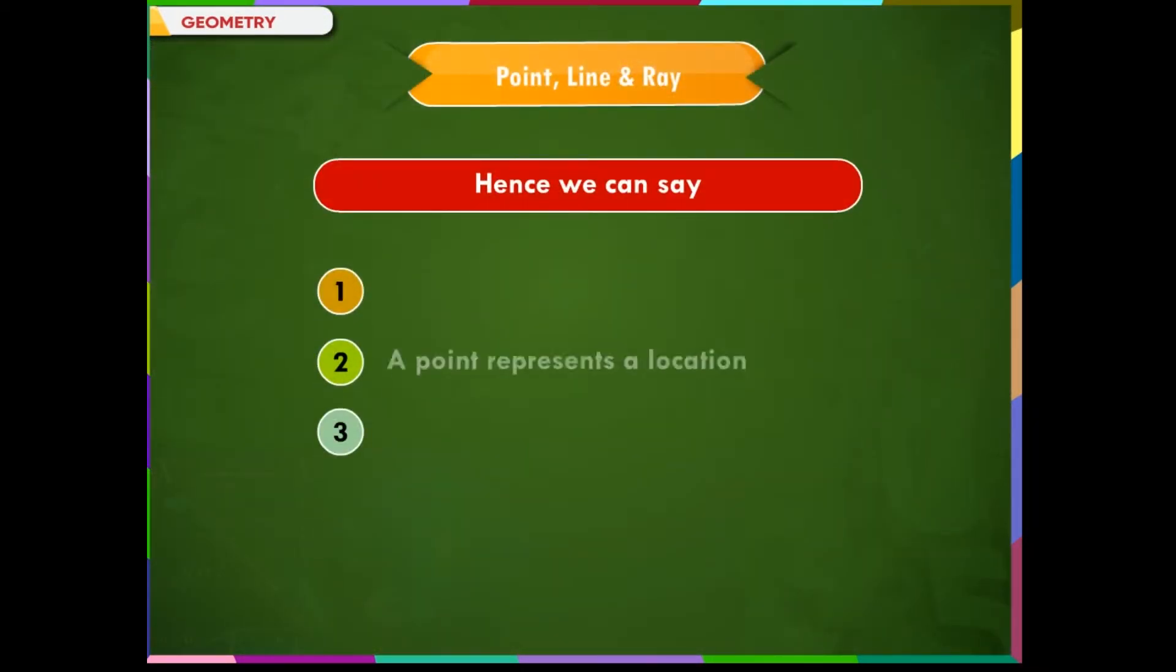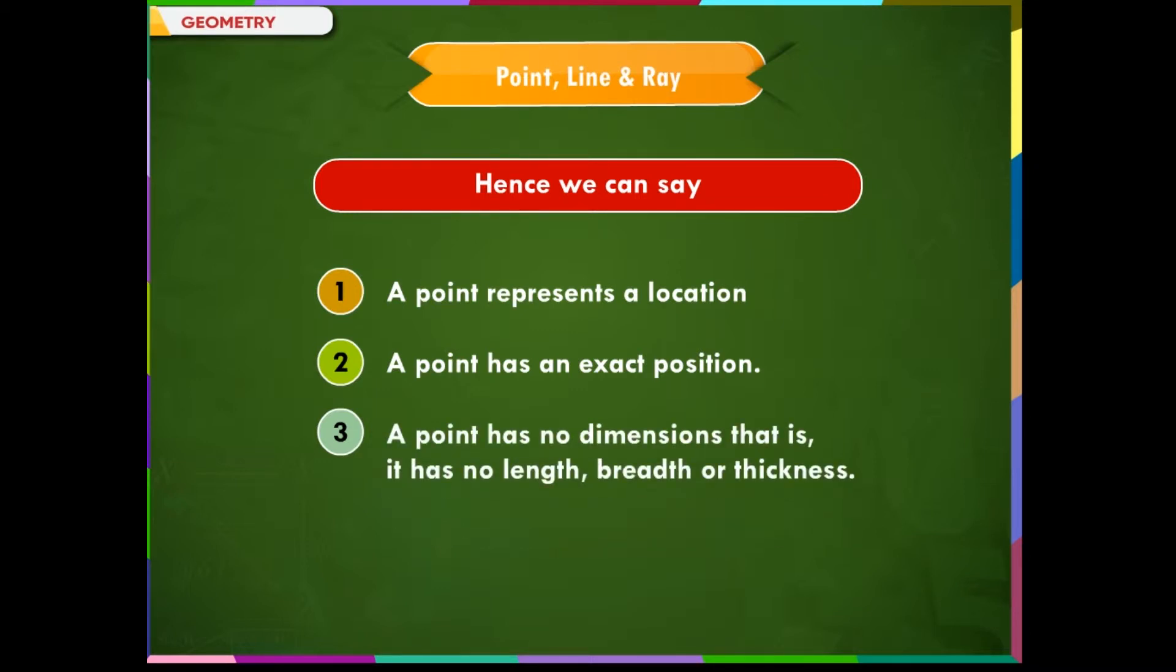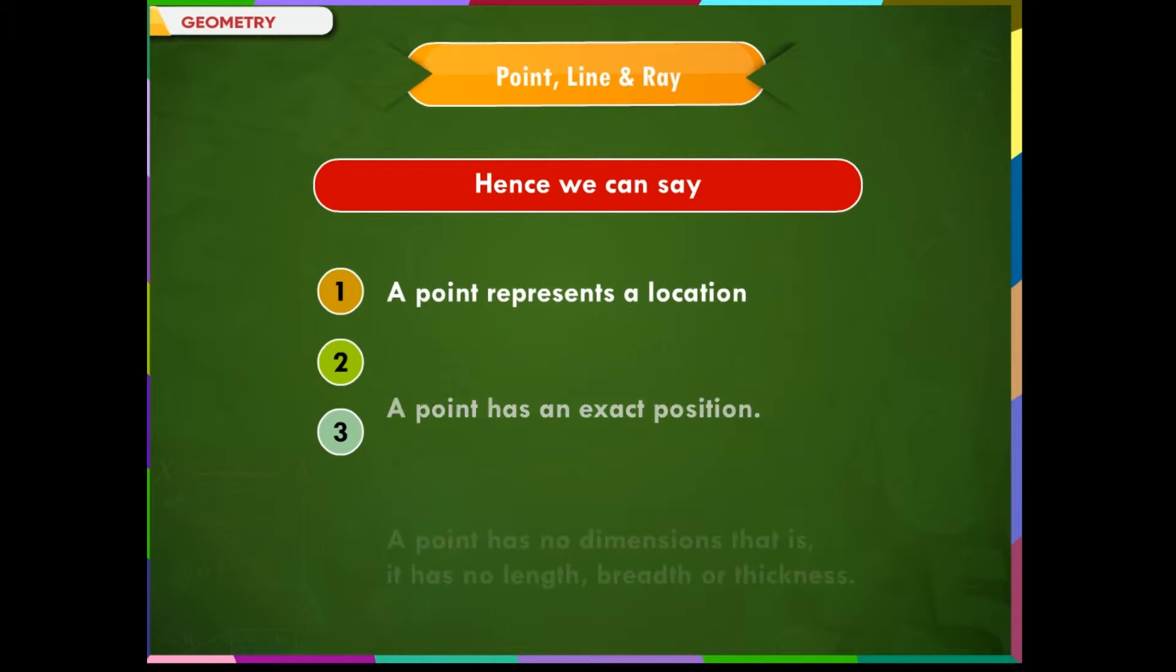Hence, we can say that: 1. A point represents a location. 2. A point has an exact position. 3. A point has no dimensions. That is, it has no length, breadth or thickness.